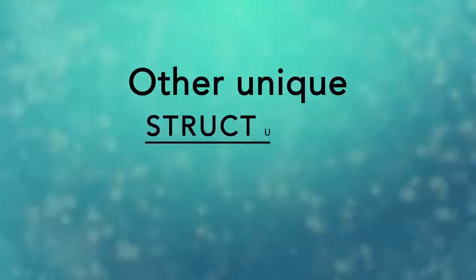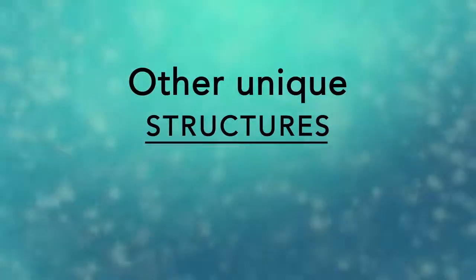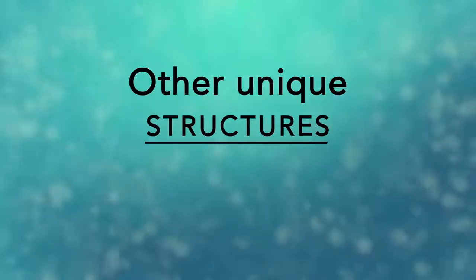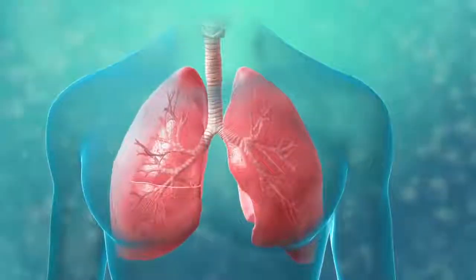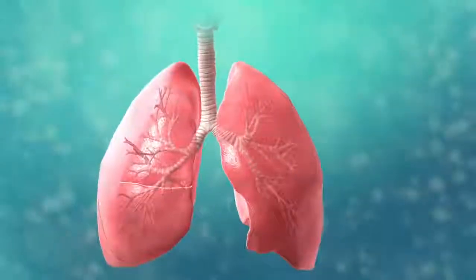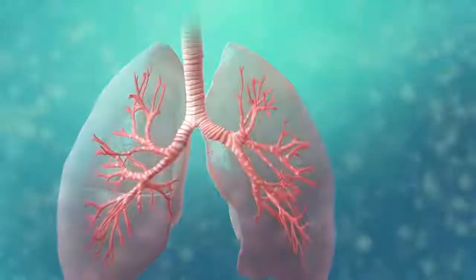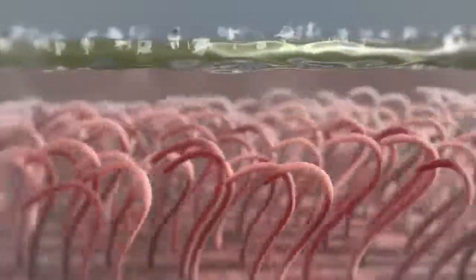There are many other unique structures that only some cells have. In humans, for example, the respiratory tract is lined with cells that have cilia. These are microscopic hair-like projections that can move in waves. This feature helps trap inhaled particles in the air and expels them when you cough.